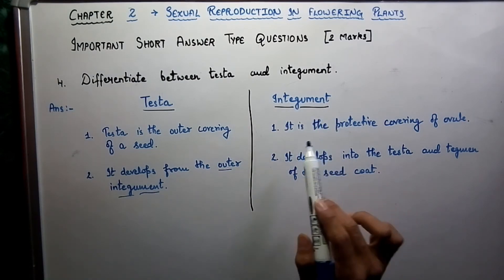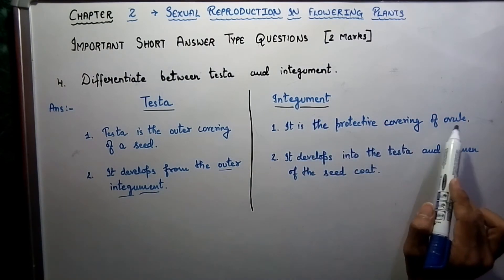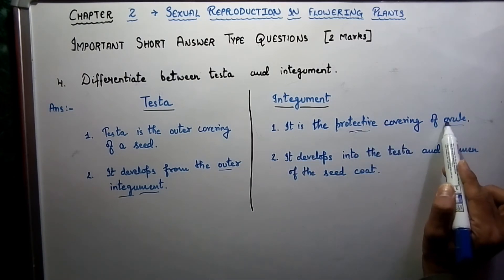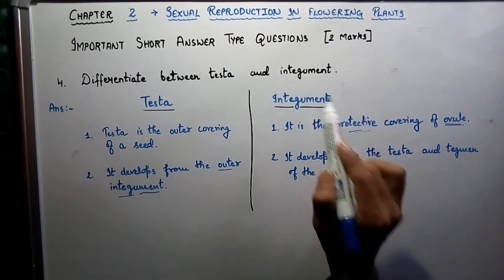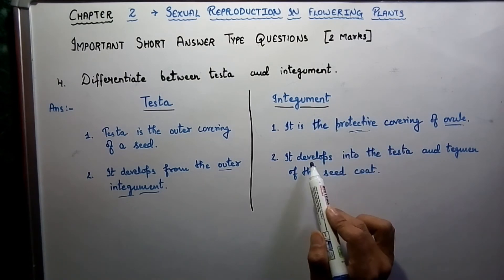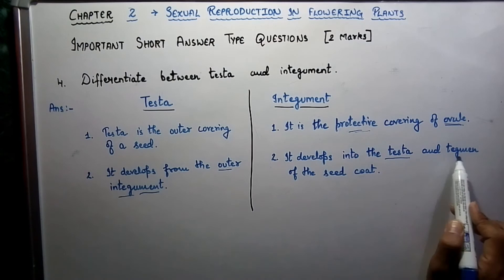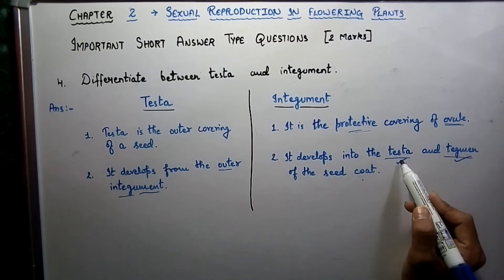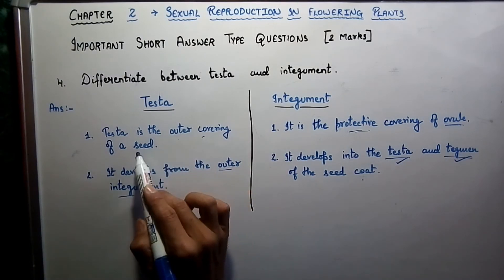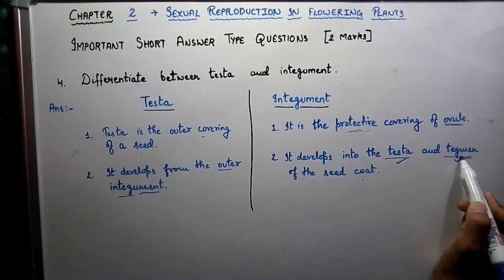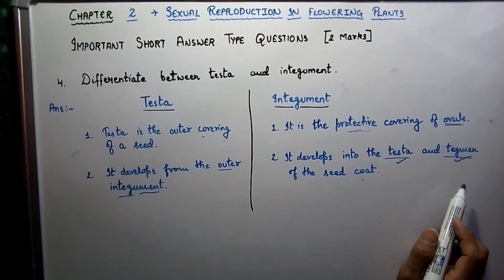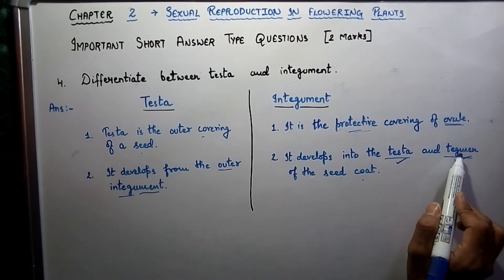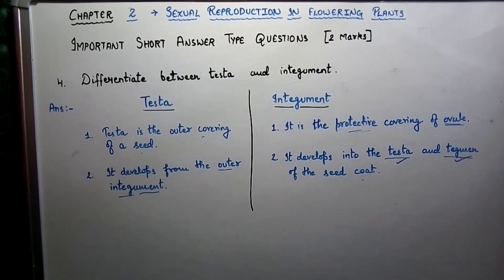In integument, it is the protective covering of an ovule. It develops into the testa and tegmen of the seed coat. Do not get confused: testa is the outer covering of a seed, whereas tegmen is the inner covering. Integument develops into both testa and tegmen.